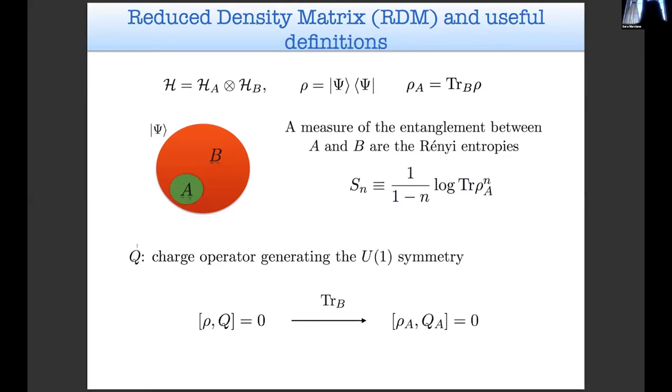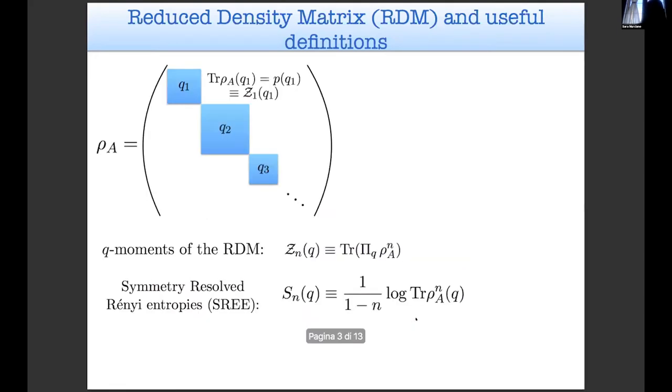Moreover, we will consider a generator of a U(1) symmetry, this charge operator Q that we consider an additive charge. This means that the total charge of the system will be given by the sum of the charge in subsystem A and the charge in subsystem B. If rho is in an eigenstate of Q it will commute with Q. We can trace over the degrees of freedom of B and obtain this other commutation relation. This basically means that rho_A has a block diagonal structure where each block can be labeled by an eigenvalue of the charge operator, the small q.